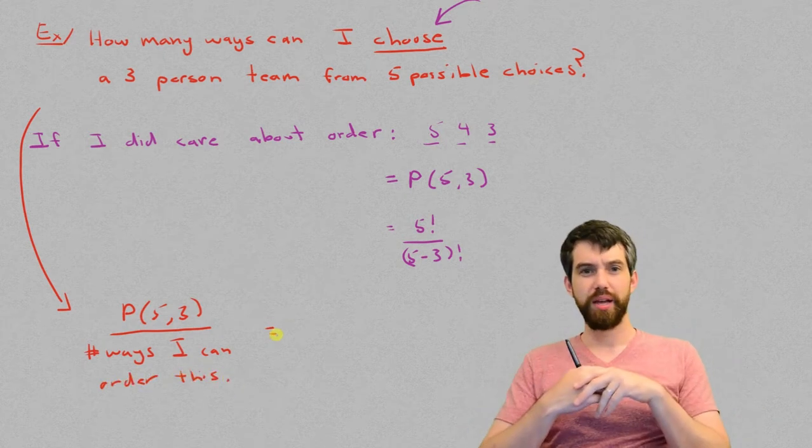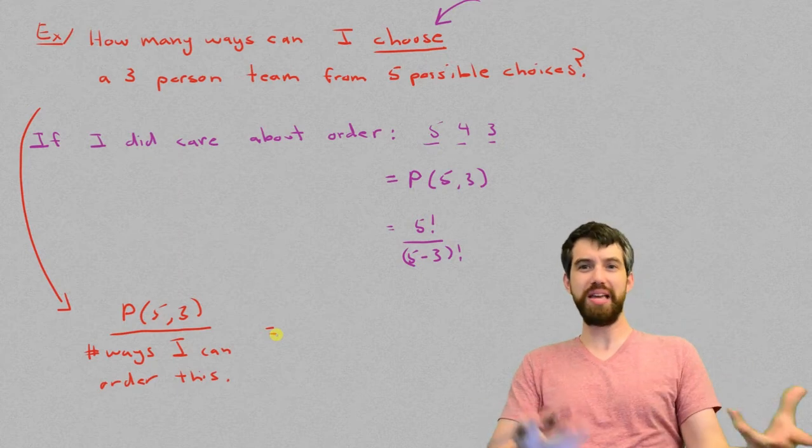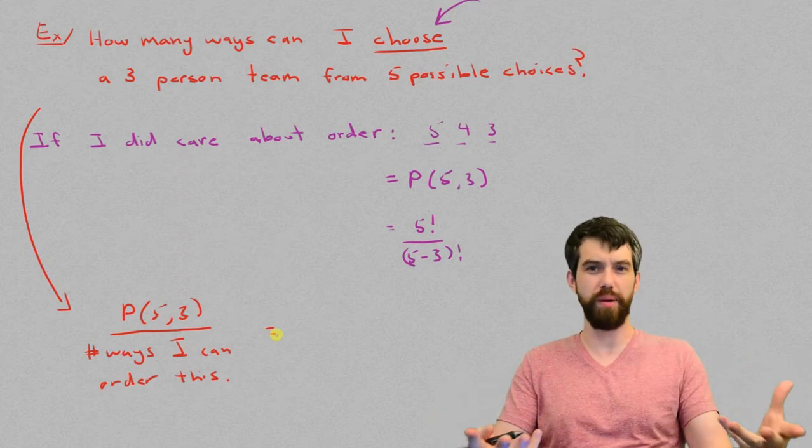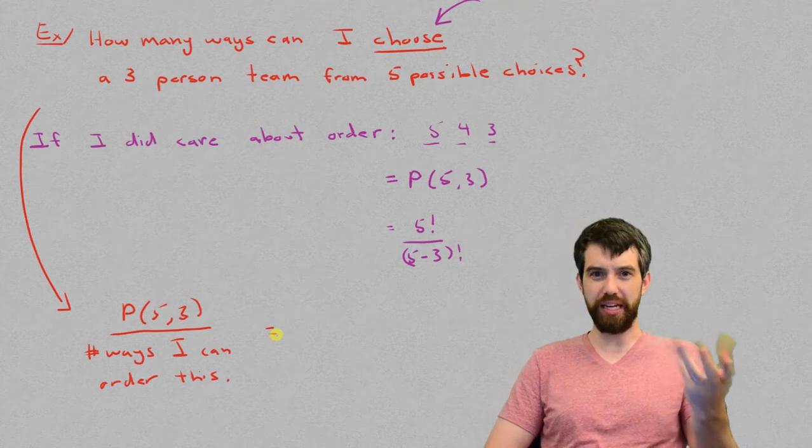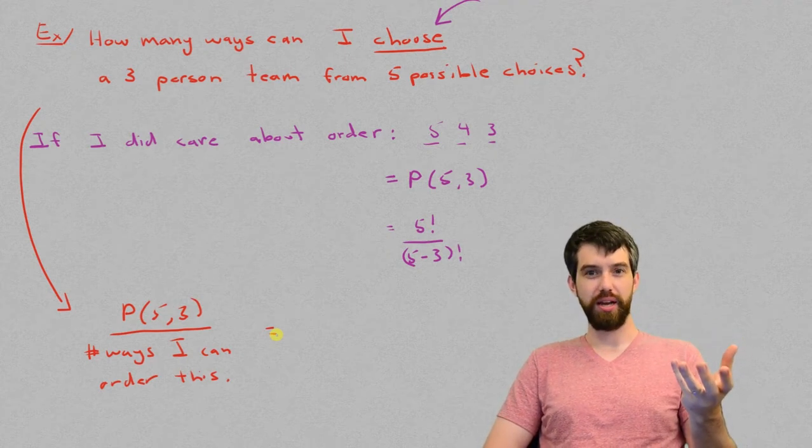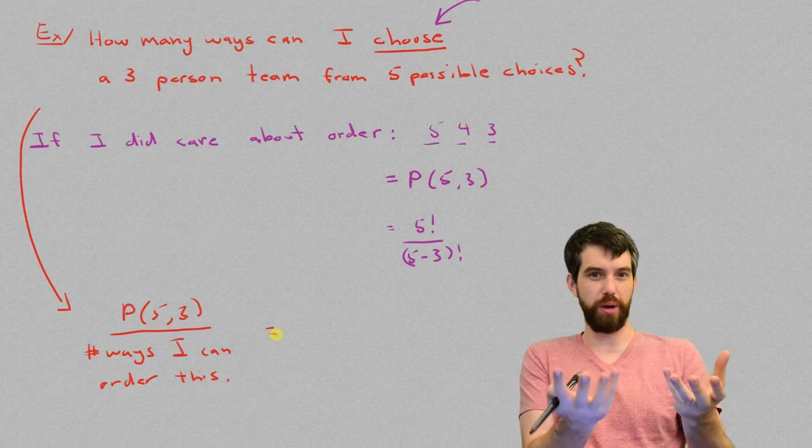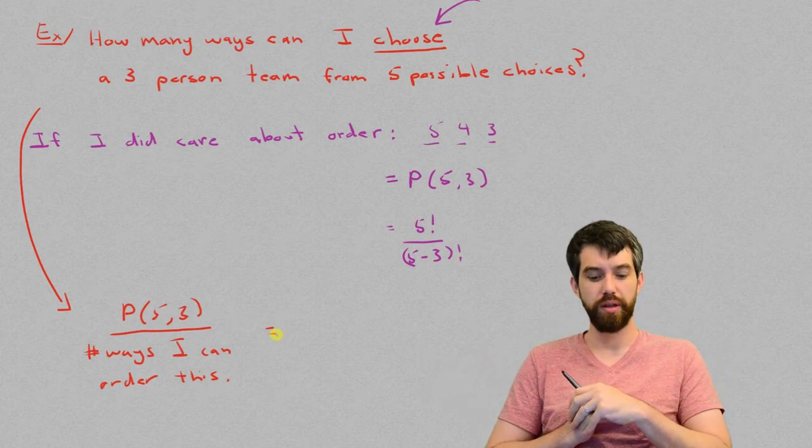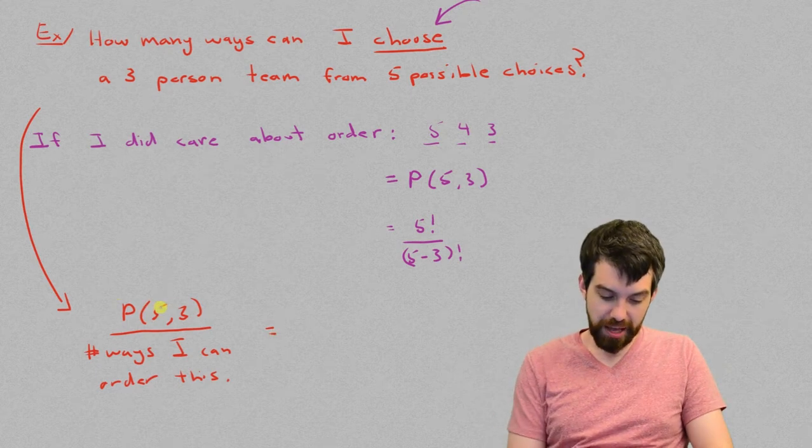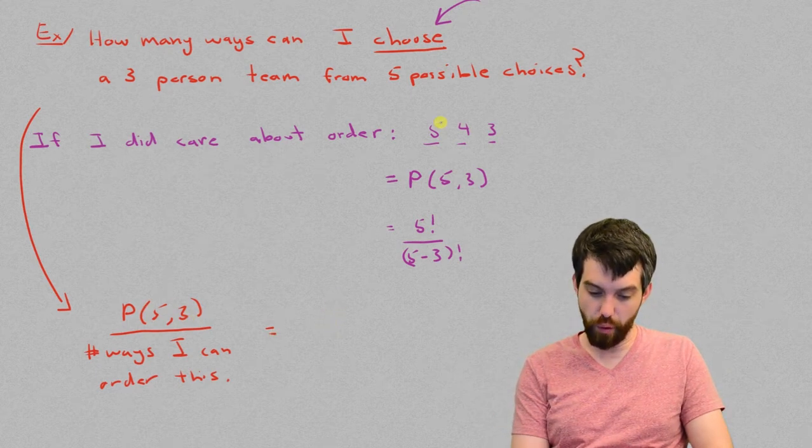Alright, well if I've got three people in a team, then how many ways are there to reorder them? That's a problem we've actually looked at in the past. There's three possibilities for who I could put first, and then there's two possibilities for who I could put second, and then there's only one possibility for who I could put third. So in other words, this P(5,3), which we had computed before, five times four times three on the top.